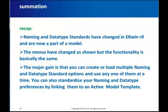To sum it up, the naming and data type standards have changed in Urban R9. Even though the menus have changed, the basic functionality is still the same. This one-time change offers the benefit of creating or loading multiple naming and data type objects with their distinct options, and you can apply any one of them at a time. These options are now part of the model, so no need to think about including them from an external location. Additionally, you can bind them to a model template and keep them in sync either manually or automatically on model load. We hope this presentation has clarified this change and that you will take advantage of the enhanced functionality of naming and data type standards. Thank you.